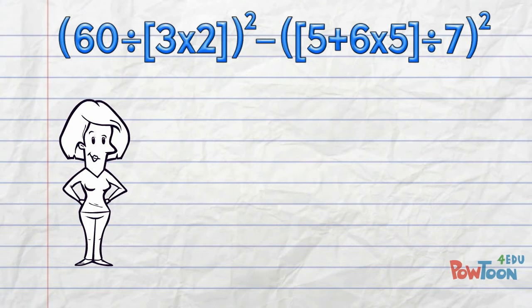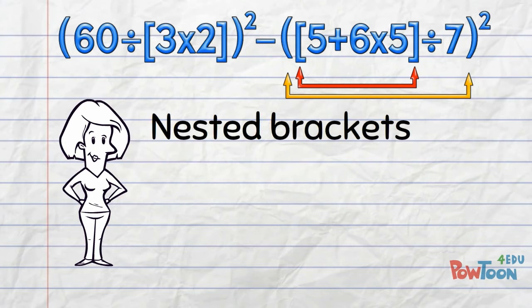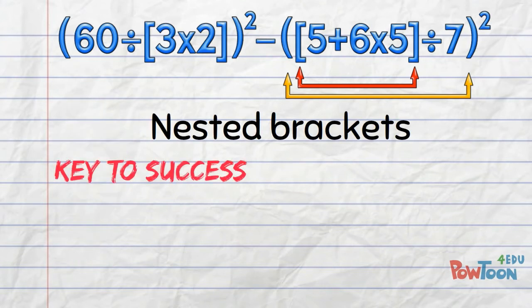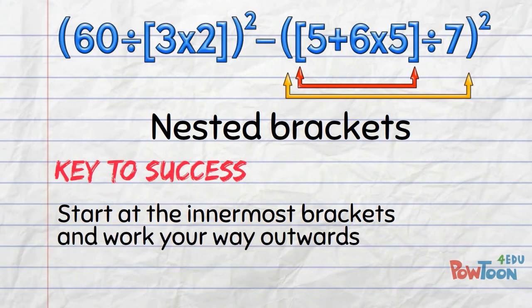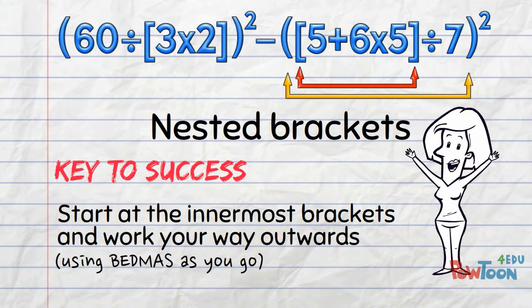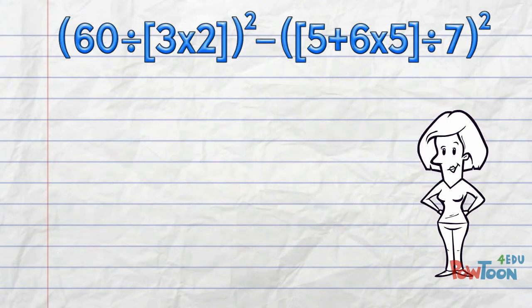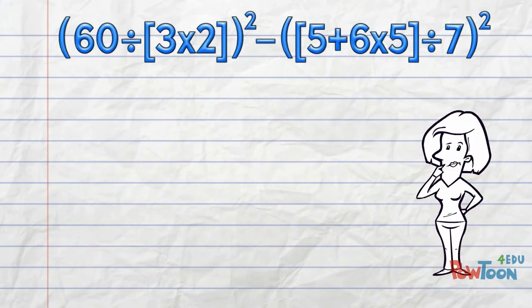Just so you know, one set of brackets inside another set of brackets is called nested brackets. And the key to handling them is simple and logical! With nested brackets we start at the innermost set of brackets and work our way outwards, all the time keeping to the order of operations rules. That makes sense! So let's get to it and find out: is this as tricky as it looks at first glance?